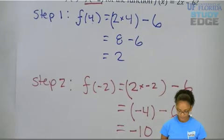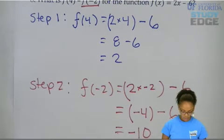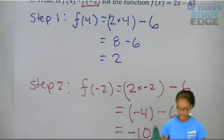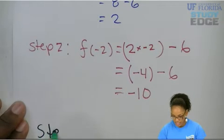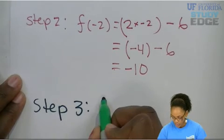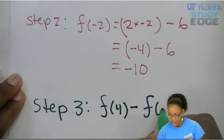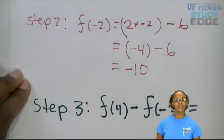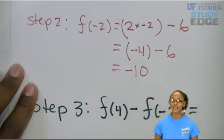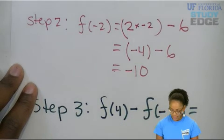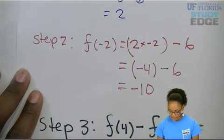So now we know that f(4) is 2, and we know f(-2) is -10. So lastly, for step 3, let's find what f(4) minus f(-2) is. Step 3, which will be our final step, we want to figure out what f(4) minus f(-2). To figure this out, all we have to do is plug in what we found for f(4) and plug in what we found for f(-2). Do you remember what you found for f(4)? 2. We'll just plug in 2 minus.